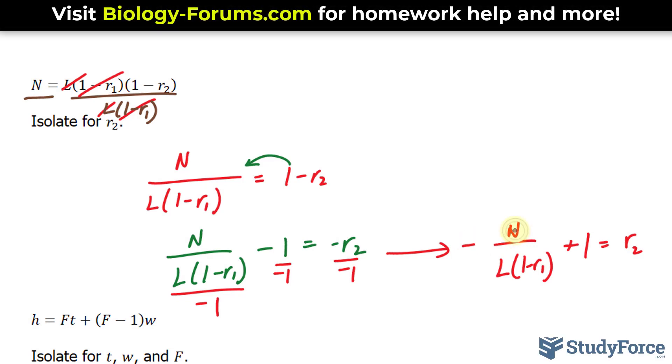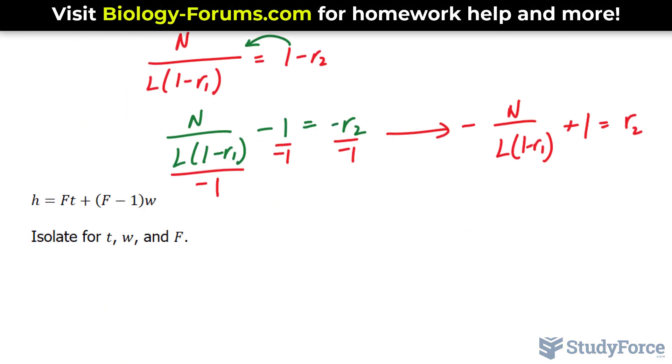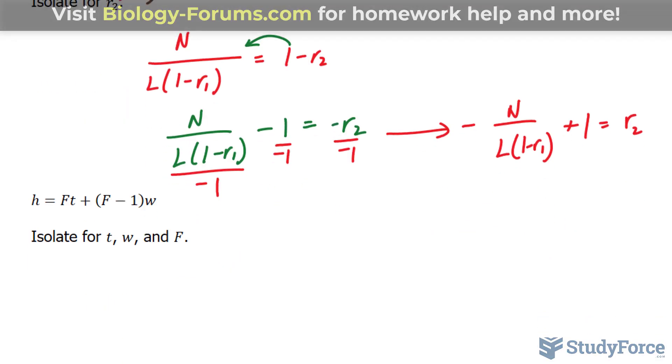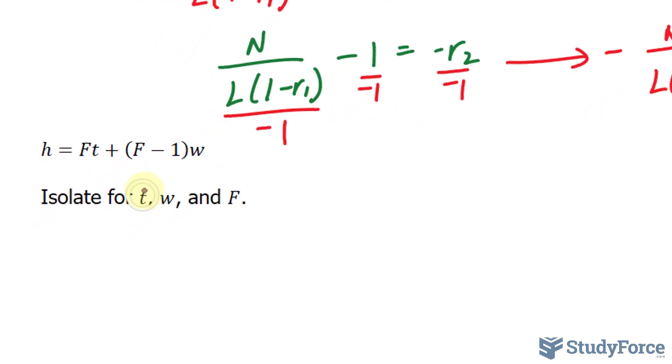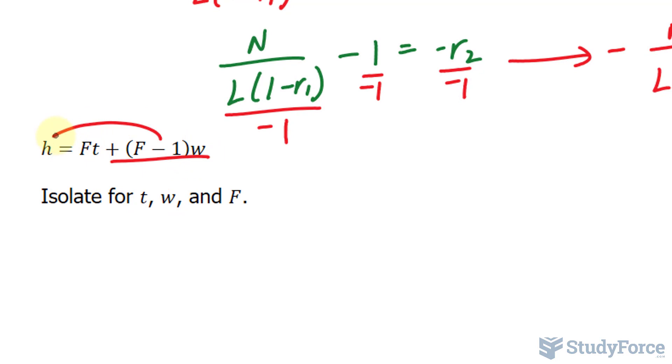Lastly, they want us to solve for T, W, and F. Let's start with T. To solve for T, you bring this over, and then divide both sides by F. So you end up with H minus bracket F minus 1 times W over F is equal to T. That was easy. Two steps.